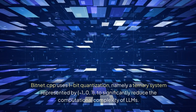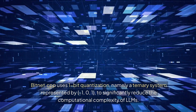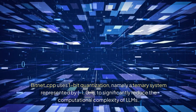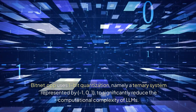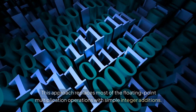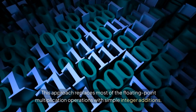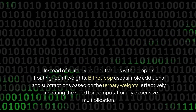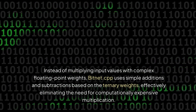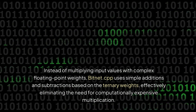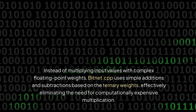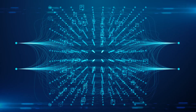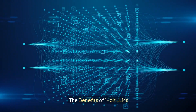BitNet.cpp uses 1-bit quantization, namely a ternary system represented by values {-1, 0, 1}, to significantly reduce the computational complexity of LLMs. This approach replaces most of the floating-point multiplication operations with simple integer additions. Instead of multiplying input values with complex floating-point weights, BitNet.cpp uses simple additions and subtractions based on the ternary weights, effectively eliminating the need for computationally expensive multiplication.